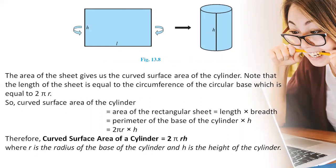So the curved surface area of the cylinder will be equal to the area of the rectangular sheet, that is length into breadth, where the length is the perimeter of the base of the cylinder. So that is perimeter of the base into height, which is equal to 2πr into h. Therefore the curved surface area of the cylinder is equal to 2πrh, where r is the radius of the base of the cylinder and h is the height of the cylinder.